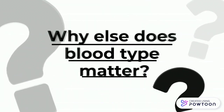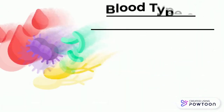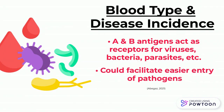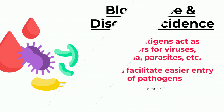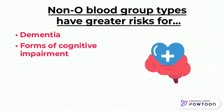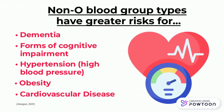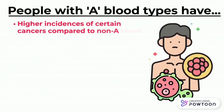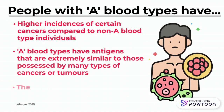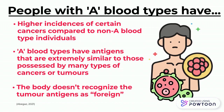Apart from transfusions, why else does blood type matter? Current research suggests interesting correlations between certain blood types and disease incidence. The A and B antigens on red blood cell surfaces act as receptors for viruses, bacteria, parasites, and other adhesion molecules, therefore possessing A or B antigens could facilitate easier entry of pathogens. For example, those in non-O blood groups have greater risk for dementia and other forms of cognitive impairment. The blood group was also associated with higher risk for hypertension, obesity, and cardiovascular disease. People with A blood types have higher incidences of certain cancers compared to non-A blood type individuals, because A blood type antigens are extremely similar to those possessed by many types of cancers or tumors. So when tumors begin to grow, the body doesn't recognize the tumor antigens as foreign — therefore no immune response is initiated and the cancer can then metastasize.